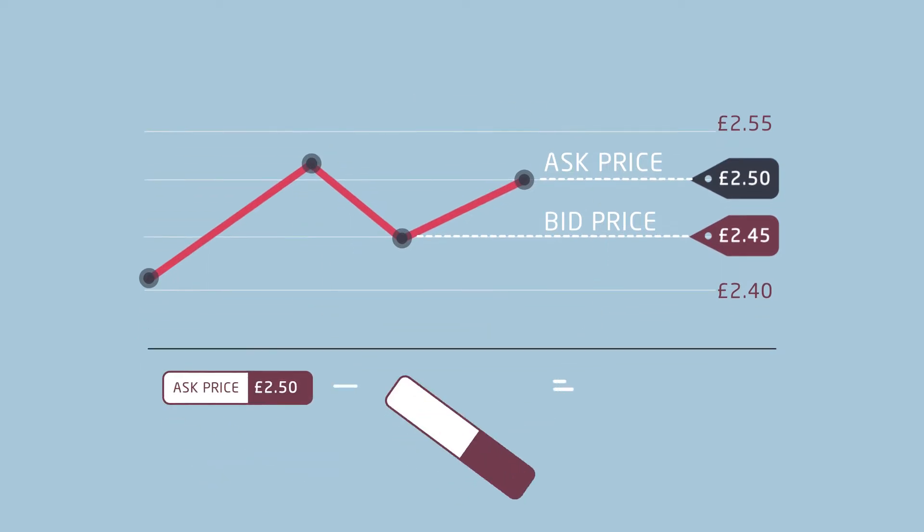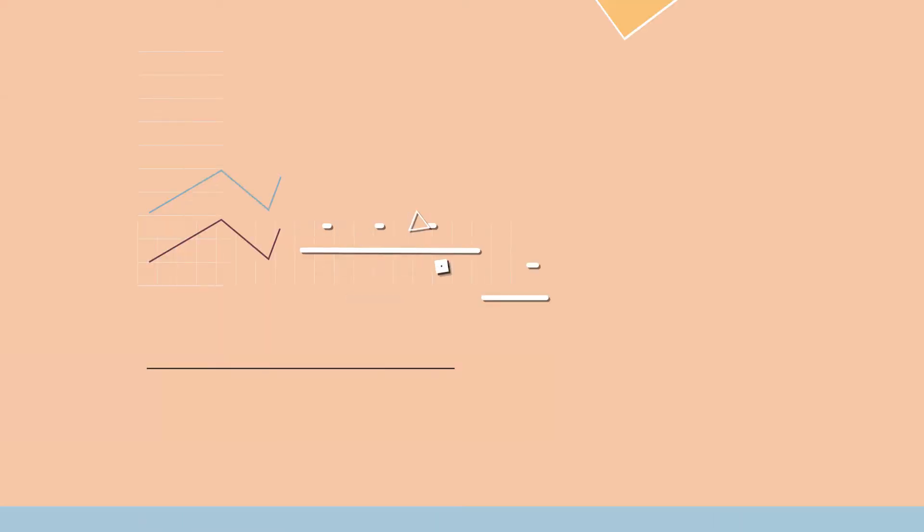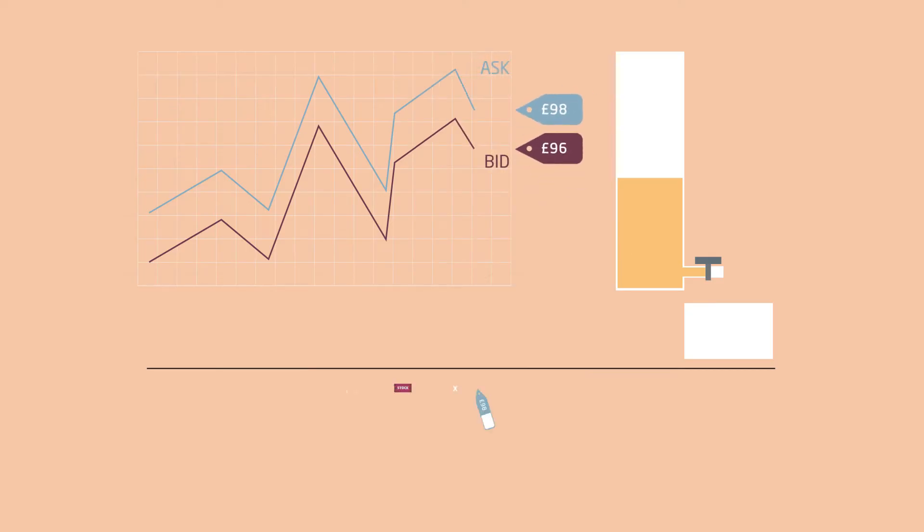Between these two figures is the spread. Here it's 5 pence. As a percentage, that is 2%. For new small companies such as Lab, the spread can be wide. That's because their shares aren't popular yet. There is less competition for them.